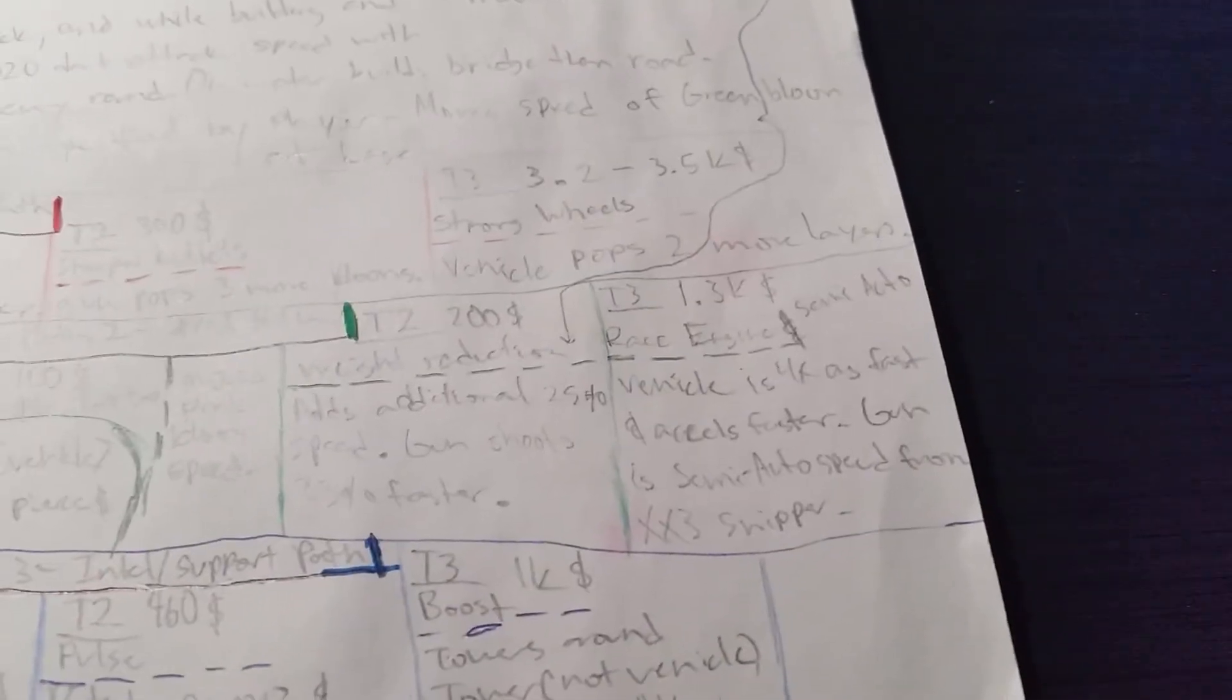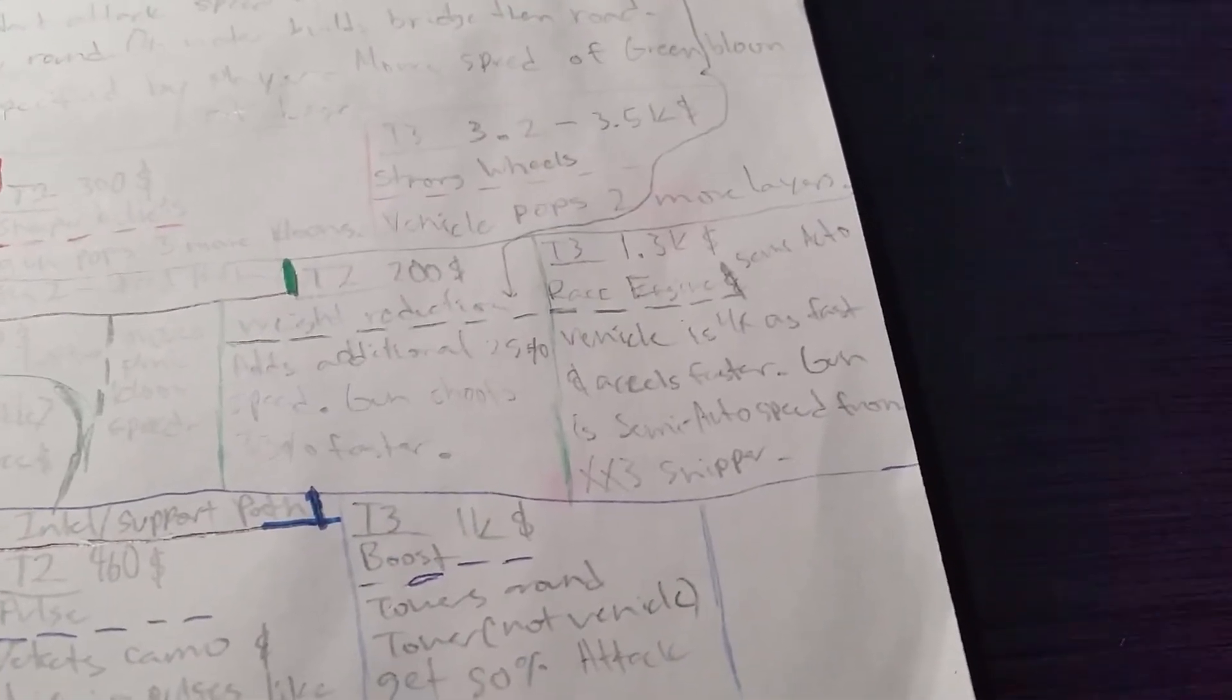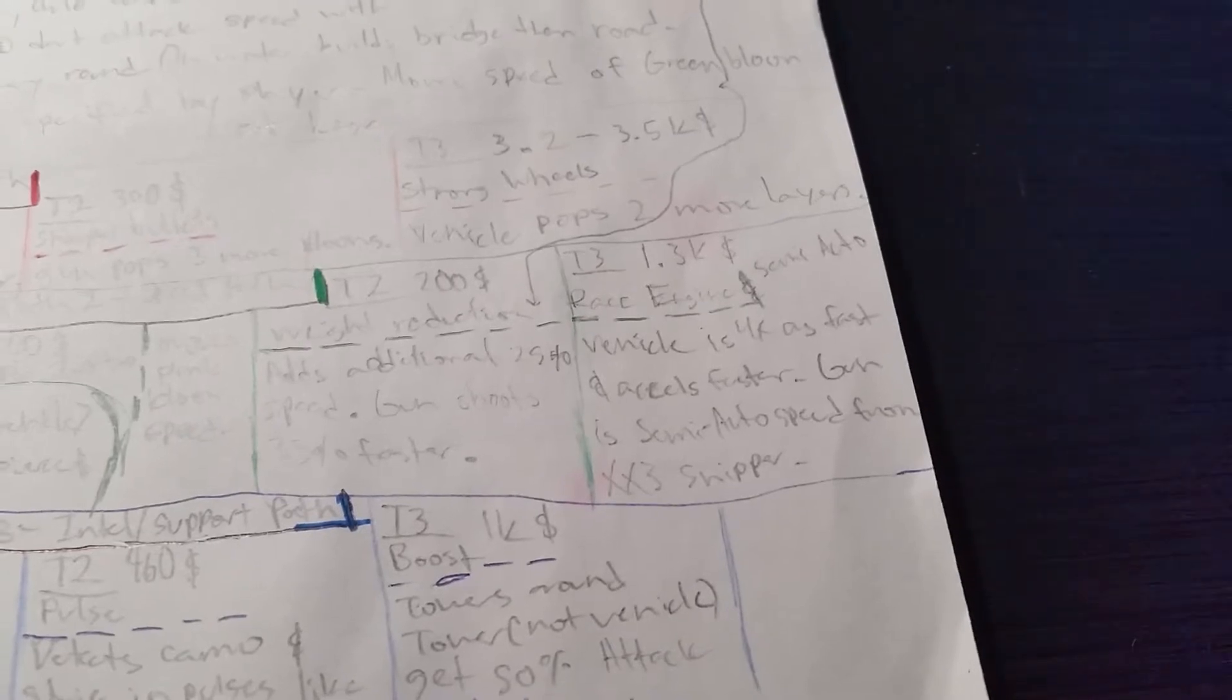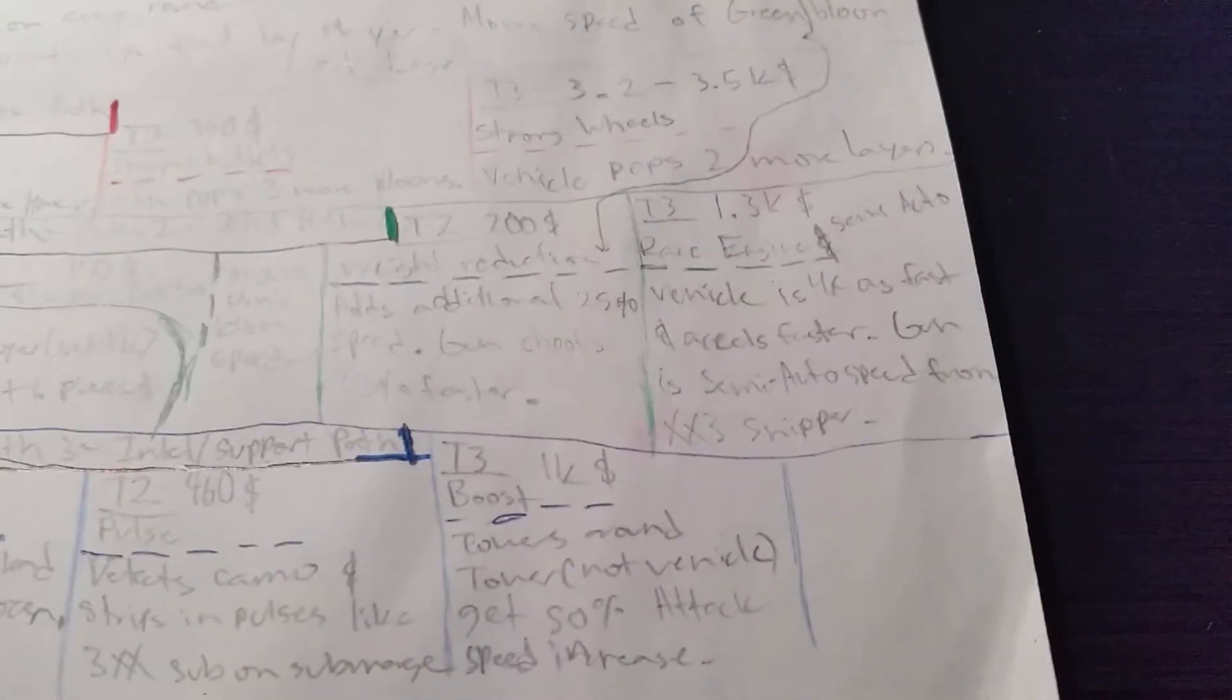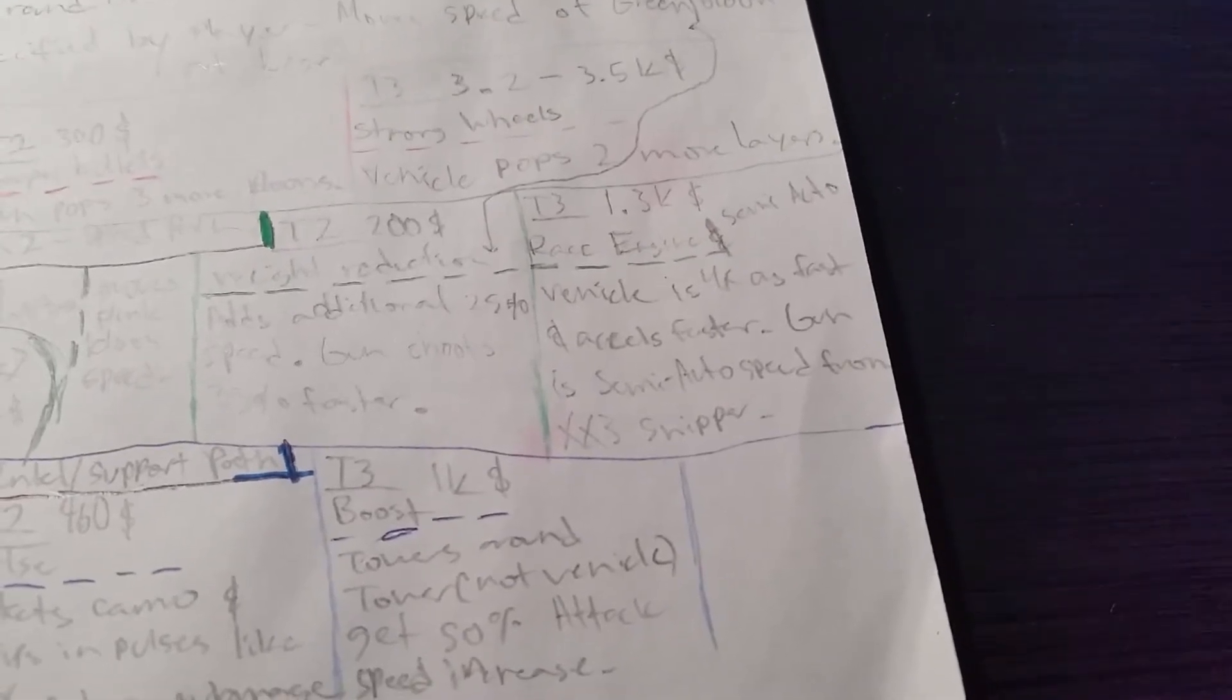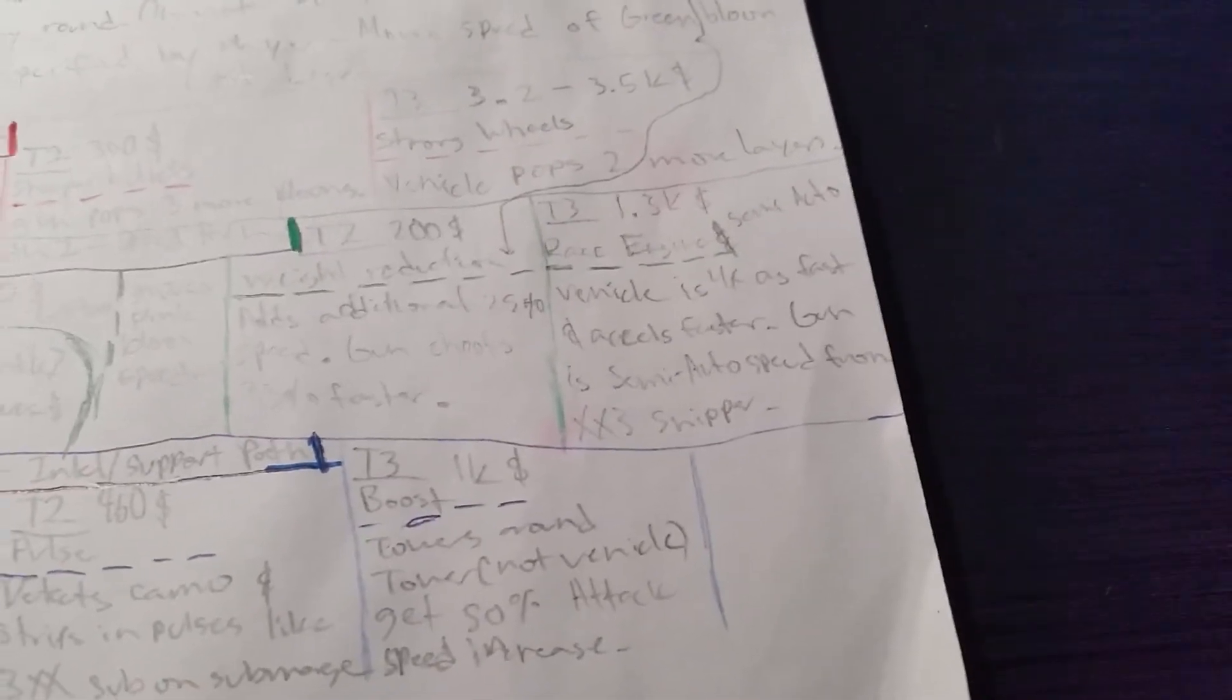Tier 3, 1,300 dollars, race engine and semi-auto. Vehicle is four times as fast over tier 2 and accelerates faster. Gun is semi-auto speed from the semi-auto sniper.